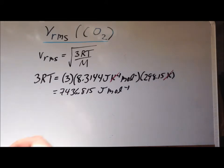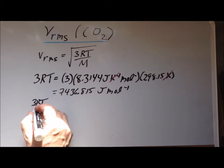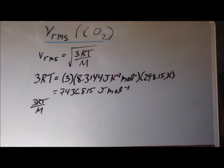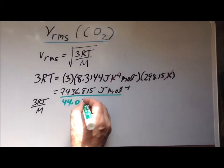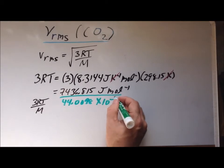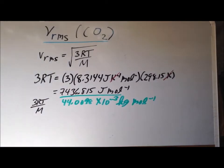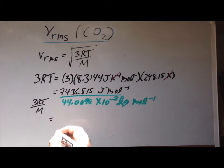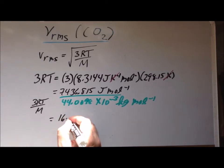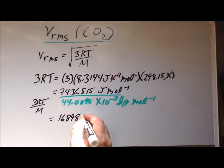Next, we want the value of the expression 3RT divided by M. Since we already have 3RT, what we need to do next is to divide this expression by the molar mass, which we've already computed to be 44.0098 times 10 to the minus 3 kilograms per mole. The numerical part of this derivation becomes 168980.9. But then the question becomes, what are the units?